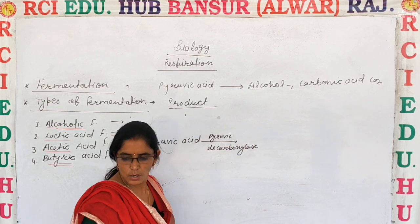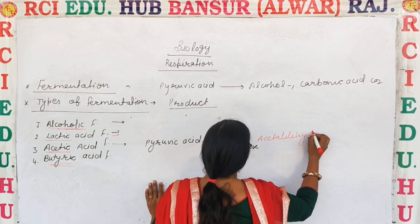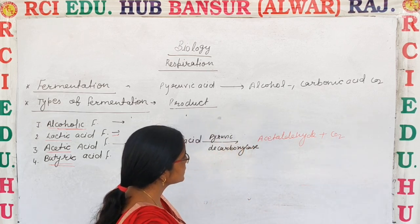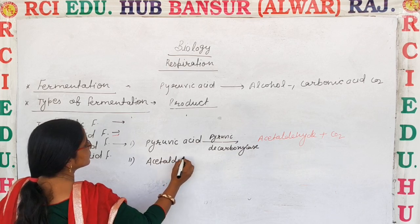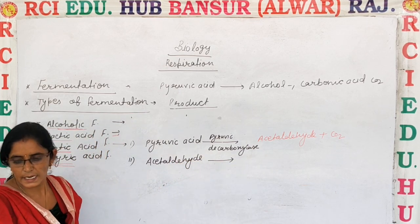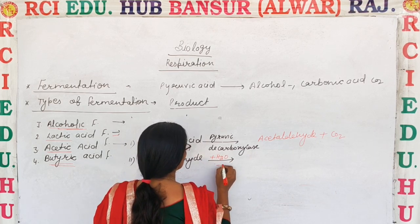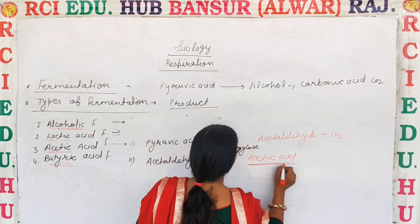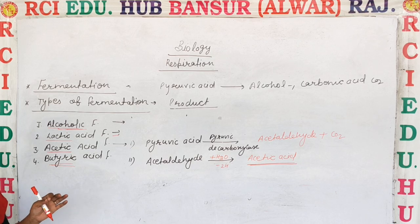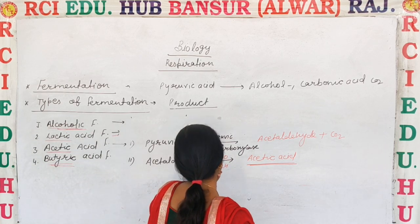In acetic acid fermentation, pyruvic acid first produces acetaldehyde and CO2 as the first step. In the second step, acetaldehyde breaks down into acetic acid in the presence of water. The main product of this fermentation is acetic acid.